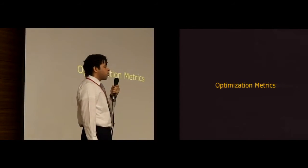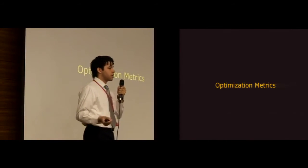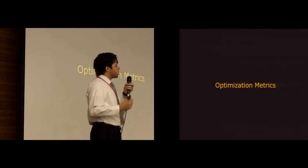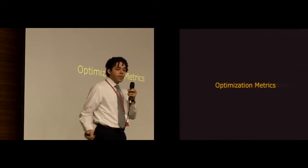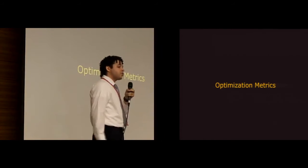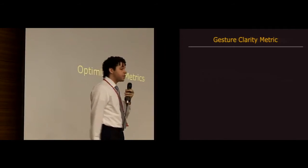So to answer those questions, we computationally explored the layout optimization space related to gesture typing to find out how three different metrics—gesture clarity, gesture speed, and QWERTY similarity as a proxy for learnability—interact with each other. So first I'm going to cover the metrics and then I'll talk about the optimization procedure.